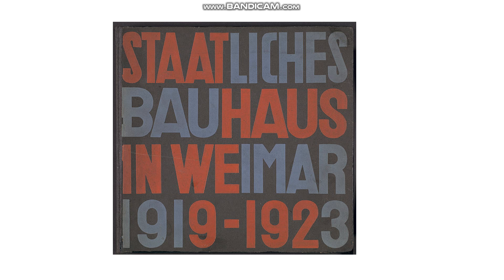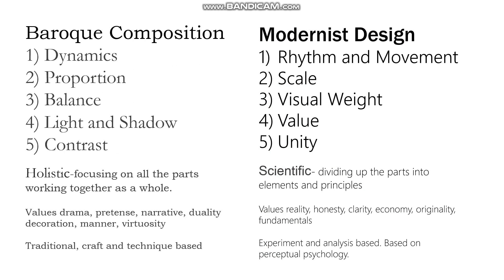My second point is that design has not always been thought of the same way. We've been thinking about design all the way through the course, and recently we've been thinking a lot about composition. When we first started thinking about composition and design, we really started with the Baroque. The contrast between the way the Baroque thought about composition versus the way the modernists thought about design can give you a good sense of how these things are constructed by their cultures and are a reflection of their culture.